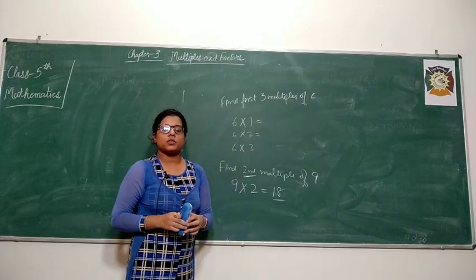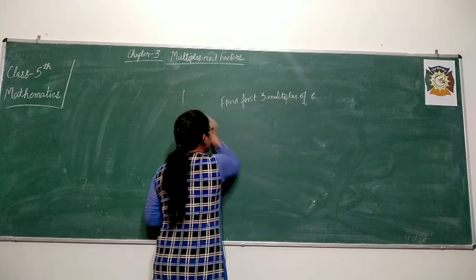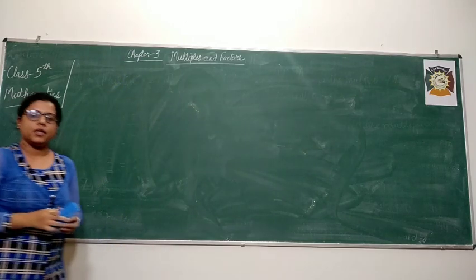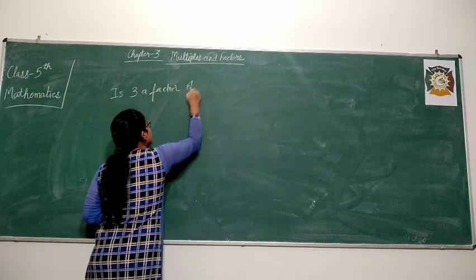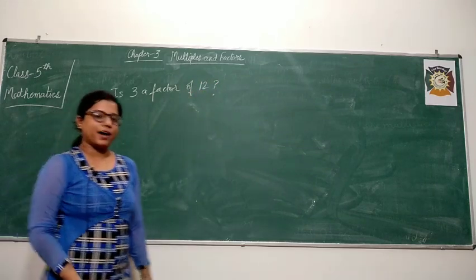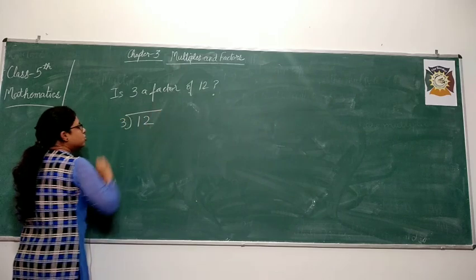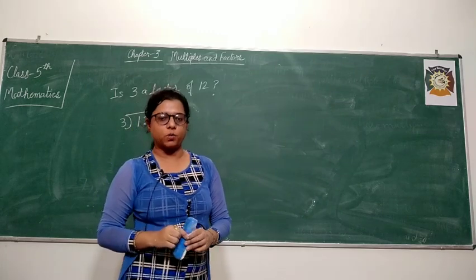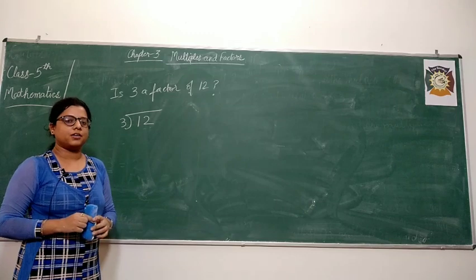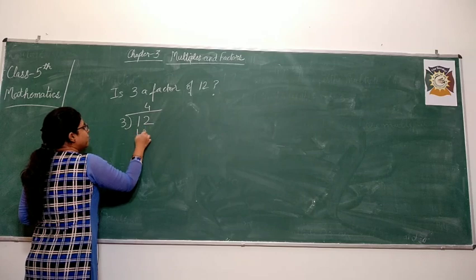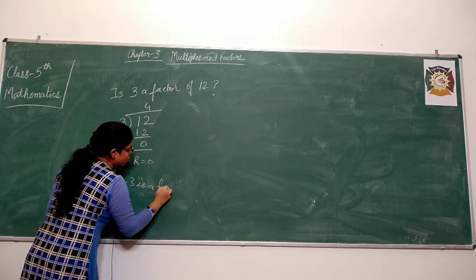Now let's move to the concept of factors. Let me give you some examples first. If you are asked: is 3 a factor of 12? Then how will you find it? You will check by dividing 12 by 3. If you get a remainder equal to 0, then you say yes, 3 is a factor of 12. But if the remainder does not come out to be 0, then 3 is not a factor of 12. Here we are clearly getting a remainder equal to 0, therefore yes — 3 is a factor of 12.